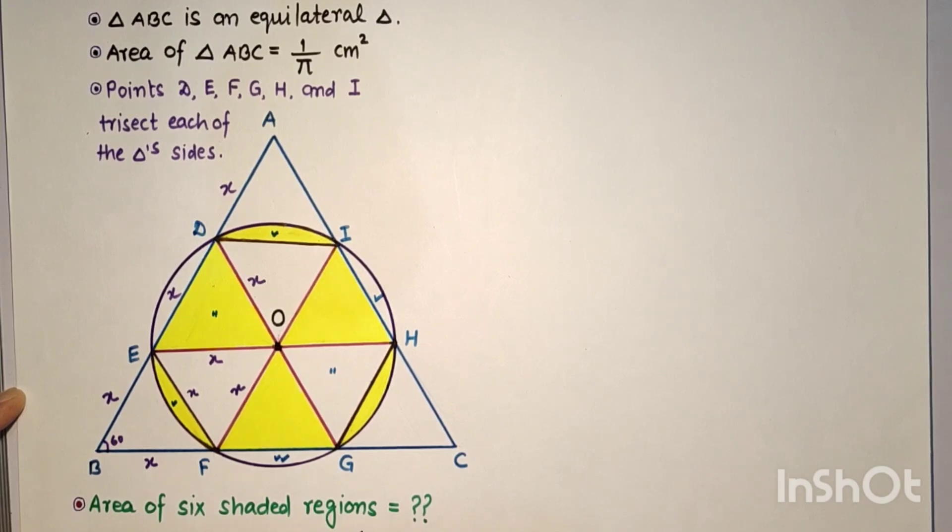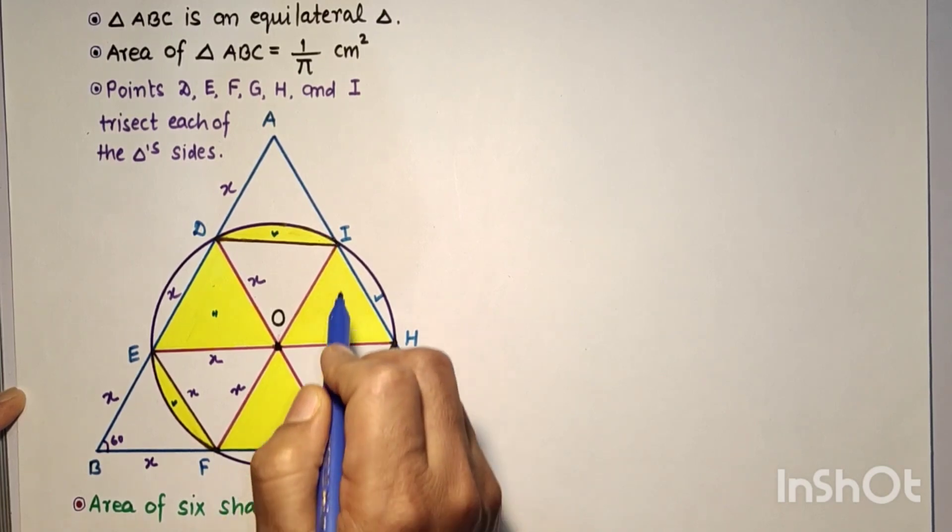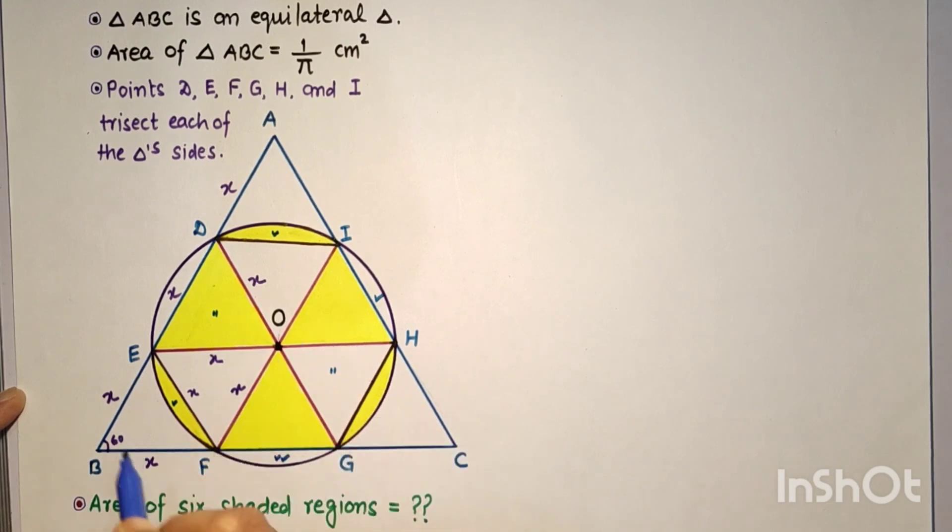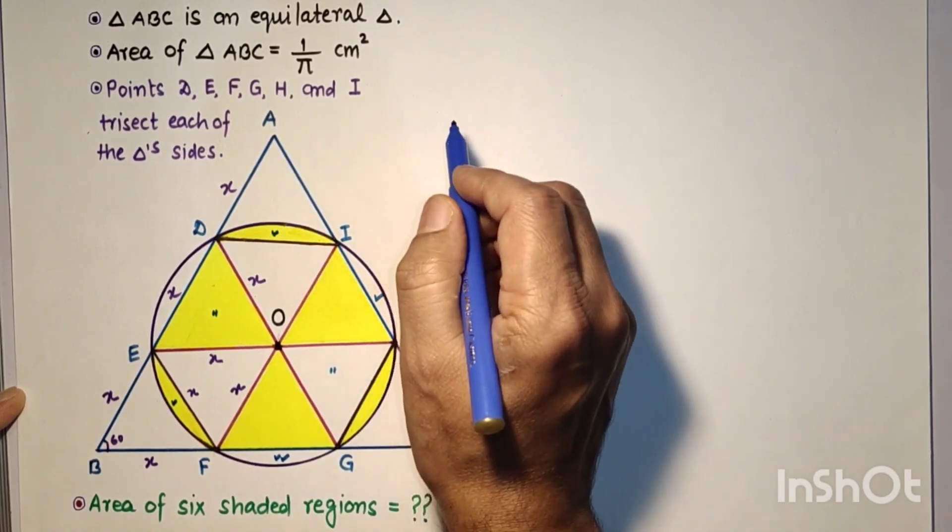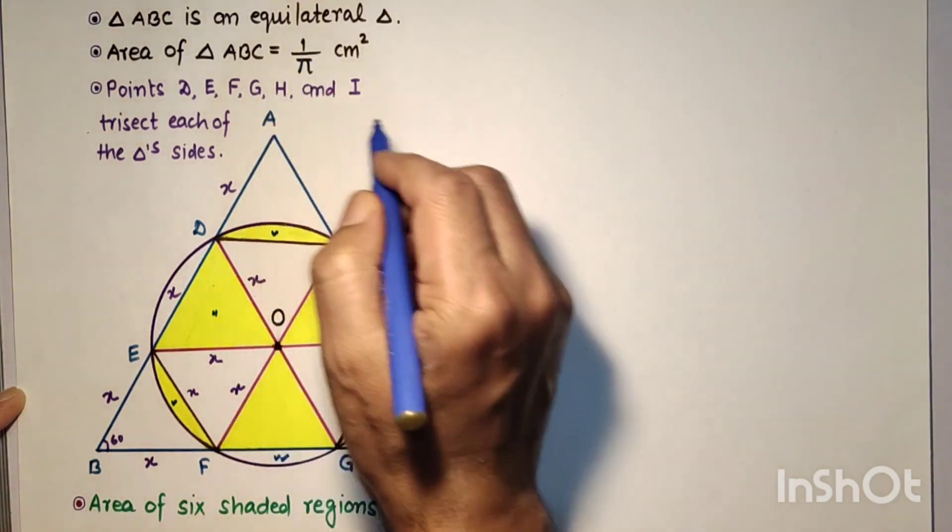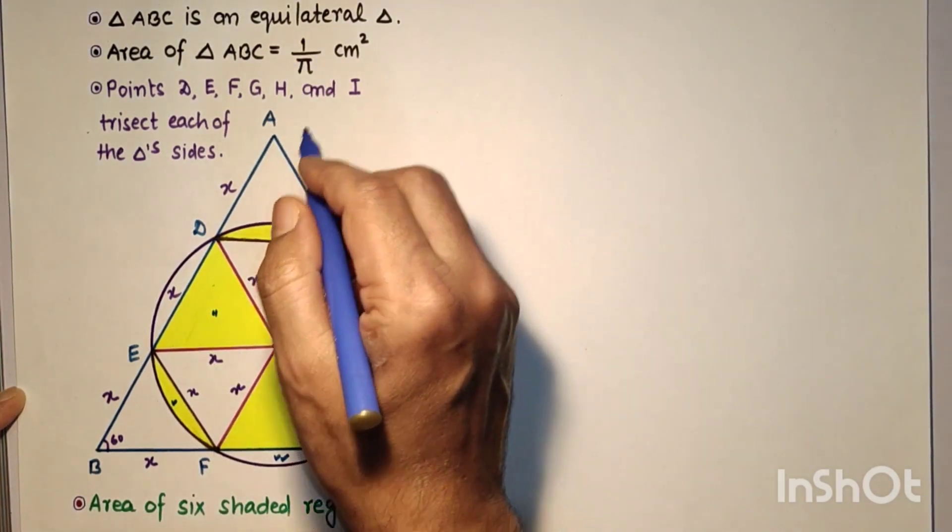So the area of the required shaded region equals the area of the semicircle only. To get the area of the shaded portion, first find X, the radius of the circle. We are given that the area of triangle ABC is 1/π cm². Using the formula